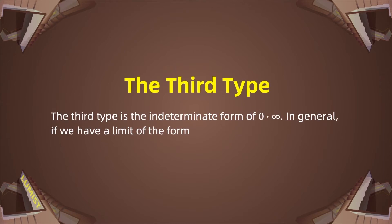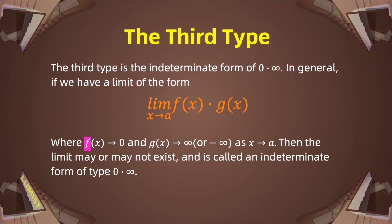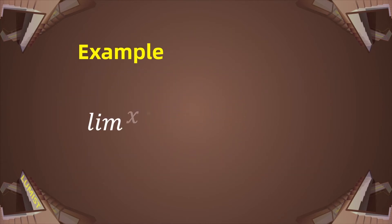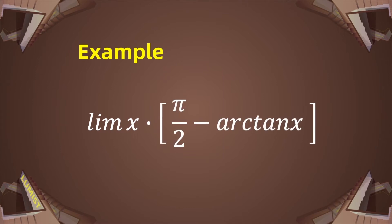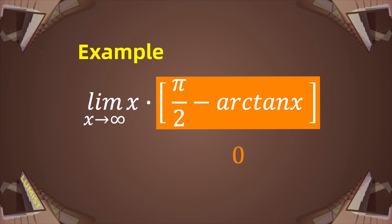The third type is the indeterminate form of zero times infinity. In general, if we have a limit of f(x) times g(x) as x approaches a, where f(x) approaches zero and g(x) approaches infinity or negative infinity as x approaches a, then the limit may or may not exist. For instance, consider the limit of x multiplied by (π/2 - arctan(x)) as x approaches infinity. As x goes to infinity, arctan(x) goes to π/2, so π/2 - π/2 gives us zero, and x approaches infinity — giving us the form infinity times zero.